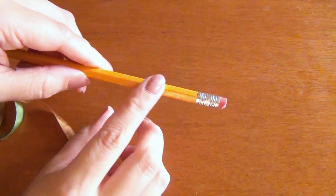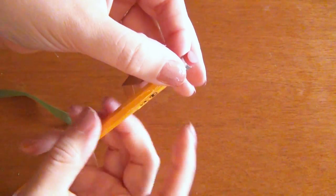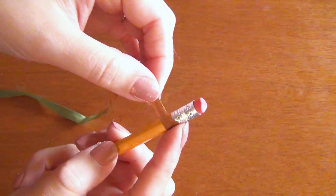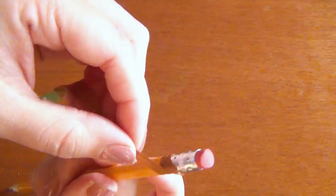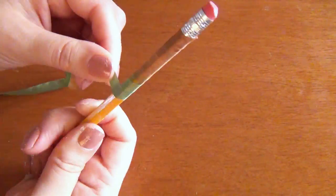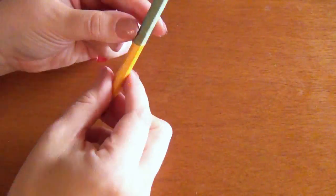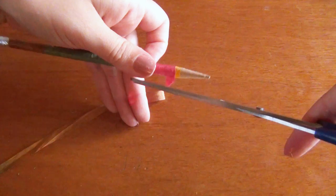Start by spreading the Fabri-Tac over a small area of the pencil near the eraser and begin wrapping your ribbon around it. You don't want it globbed on, it's best to actually spread it out a little bit before you put the ribbon on it or the moisture in the glue will soak through the ribbon and leave a dark mark on it.